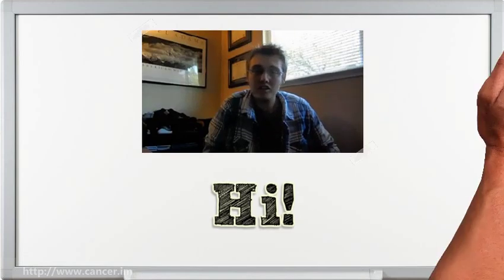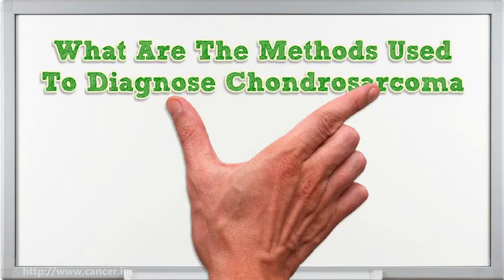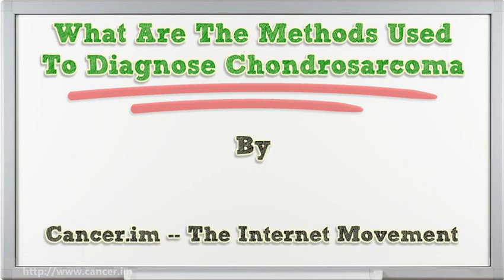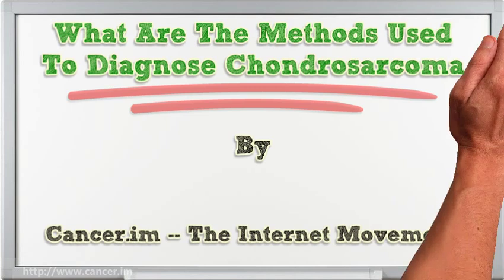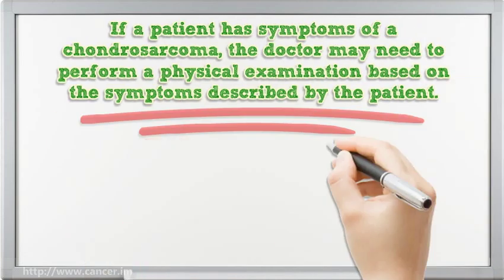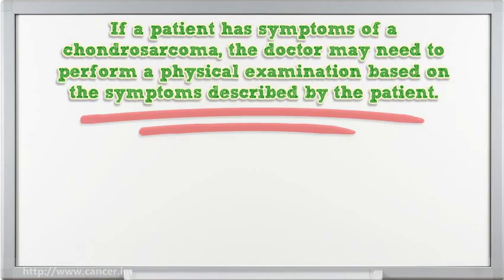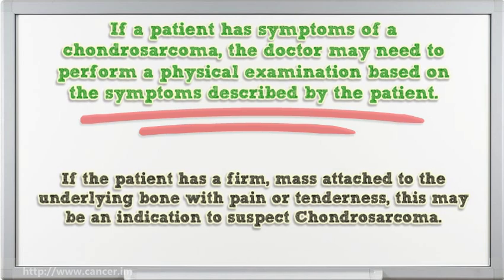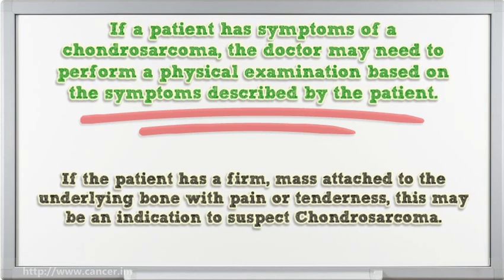I'm going to talk about what are the methods used to diagnose Chondrosarcoma. If a patient has symptoms of Chondrosarcoma, the doctor may need to perform a physical examination based on the symptoms described by the patient. If the patient has a firm mass attached to the underlying bone with pain or tenderness, this may be an indication to suspect Chondrosarcoma.